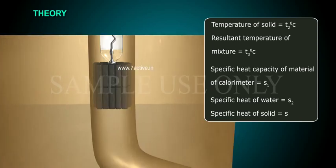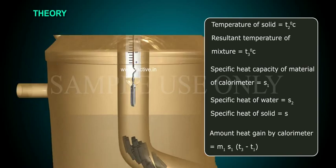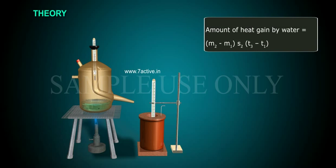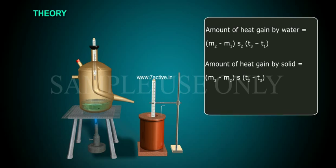Specific heat of solid is equal to S. Amount of heat gained by calorimeter is equal to M1 S1 into (T3 minus T1). Amount of heat gained by water is equal to (M2 minus M1) into S2 into (T3 minus T1). Amount of heat lost by solid is equal to (M3 minus M2) into S into (T2 minus T3).